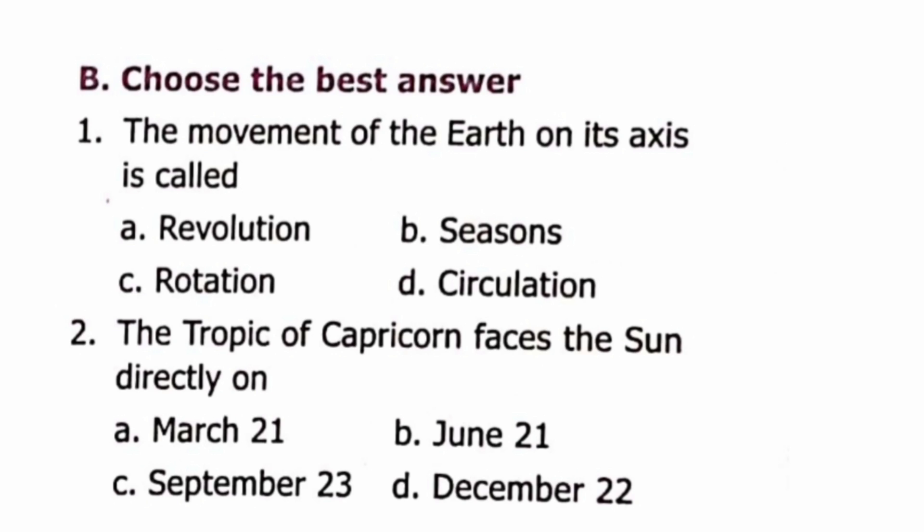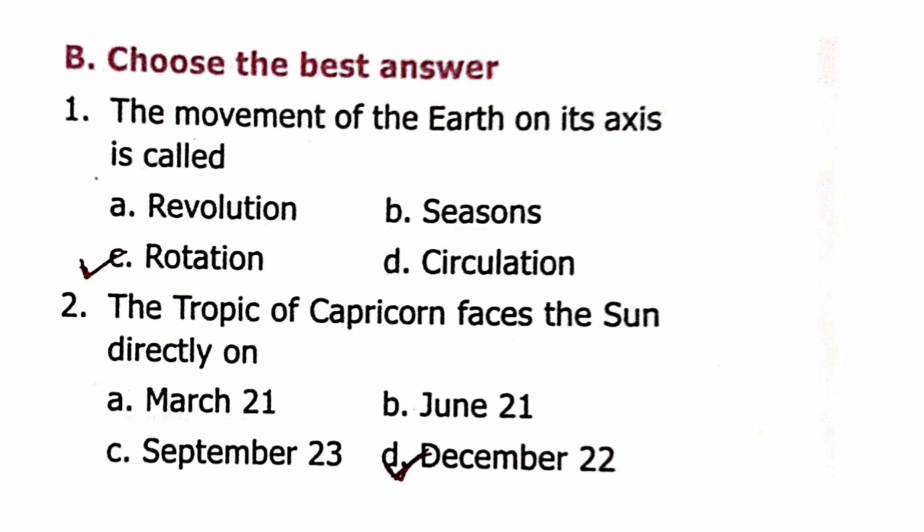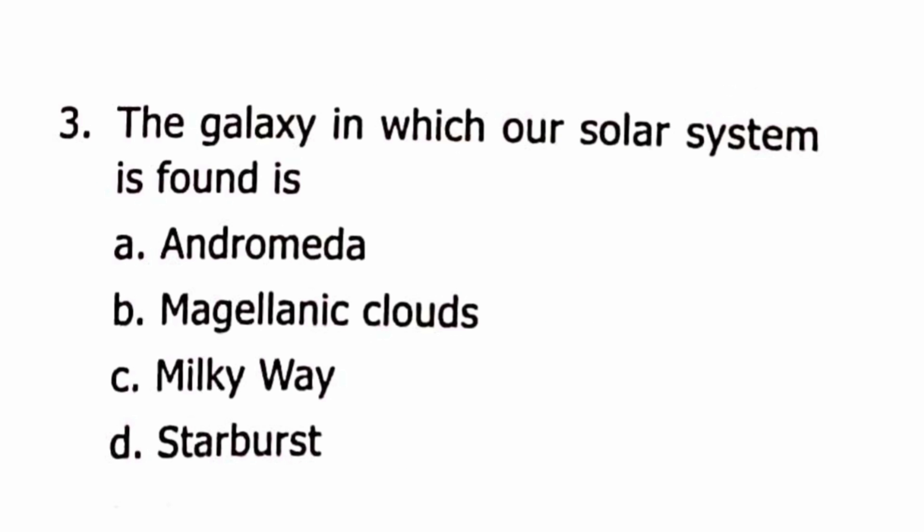Section B: Choose the Best Answer. Question 1: The movement of the Earth on its axis is called Rotation. Question 2: The Tropic of Capricorn faces the Sun directly on December 22nd.